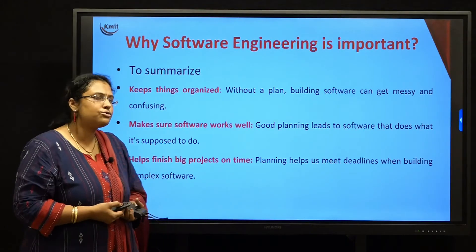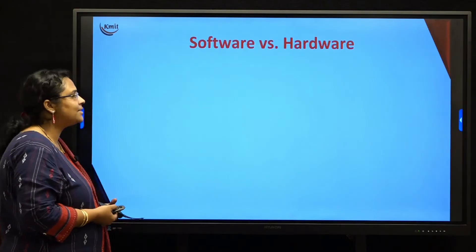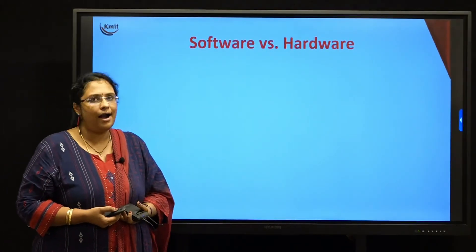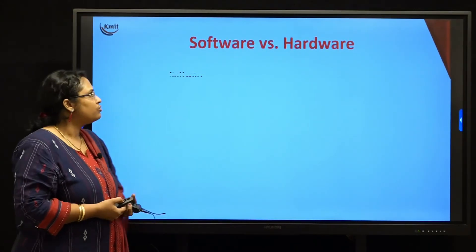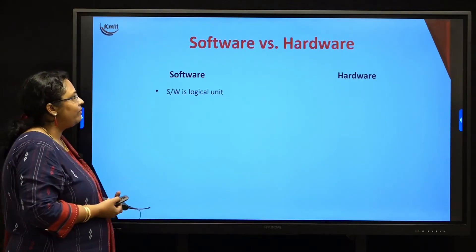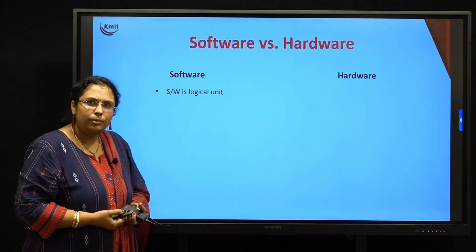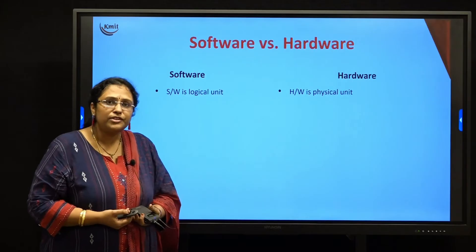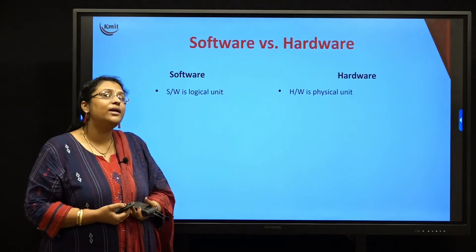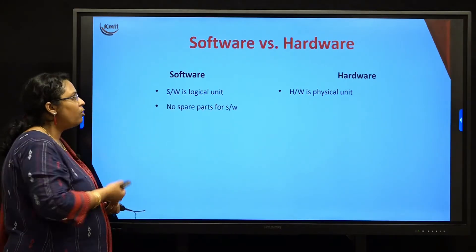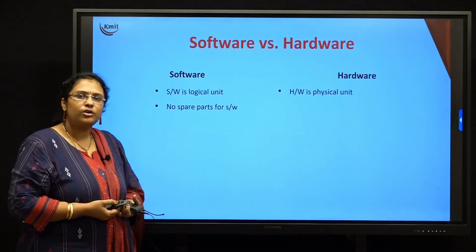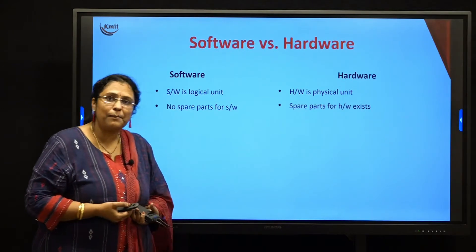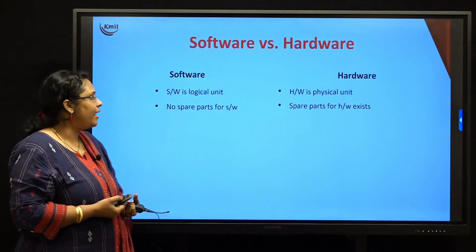Now let us understand the basic difference between software and hardware. Software is a logical unit — that means you cannot touch it. Hardware is a physical unit — that means you can touch it. There are no spare parts for your software, whereas you do have spare parts for your hardware.